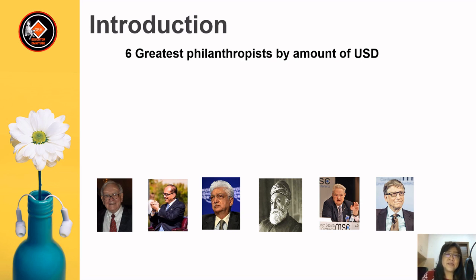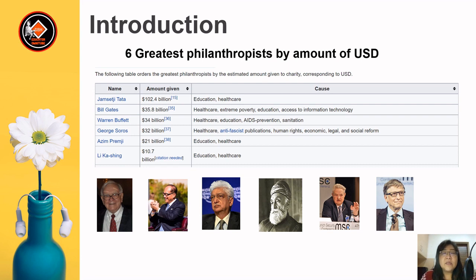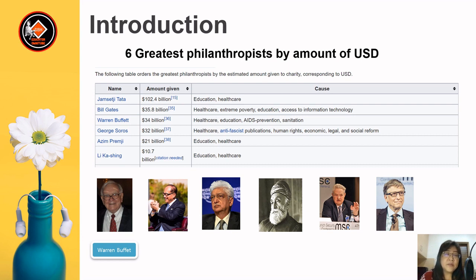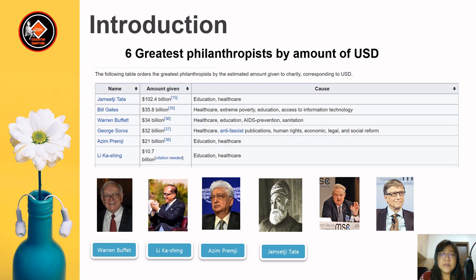Here we have six greatest philanthropists by amount of money in U.S. dollars, taken from Wikipedia. The following table orders the greatest philanthropists by the estimated amount given to charity. We have Jamsenji Tata, Bill Gates, Warren Buffett, George Soros, Azeem Premji, and Li Ka-shing. Can you guess which picture is for which philanthropist? The first picture is Warren Buffett, number two is Li Ka-shing, number three is Azeem Premji, number four is Jamsenji Tata, then George Soros, and the last one is Bill Gates.